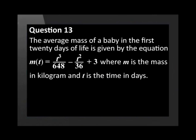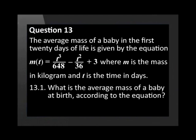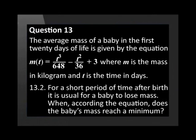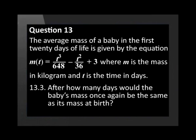The average mass of a baby in the first 20 days of life is given by the equation m of t is equal to t cubed divided by 648 minus t squared divided by 36 plus 3, where m is the mass in kilogram and t is the time in days. What is the average mass of a baby at birth according to the equation? For a short period of time after birth, it is usual for a baby to lose mass. When, according to the equation, does the baby's mass reach a minimum? After how many days would the baby's mass once again be the same as its mass at birth?